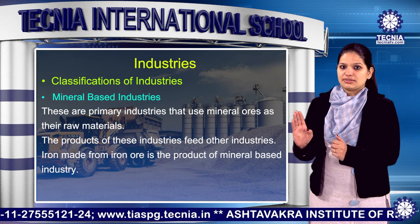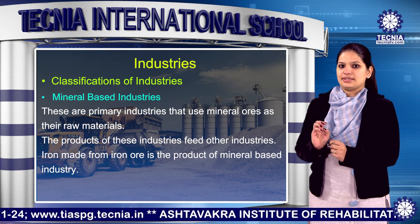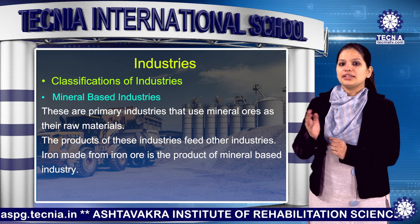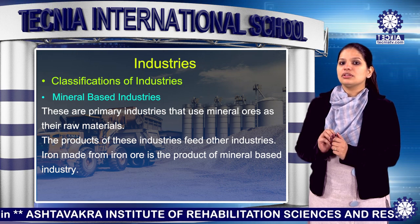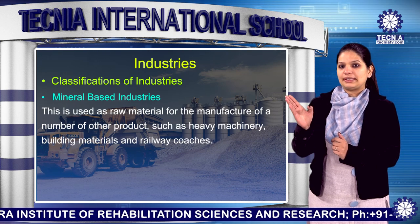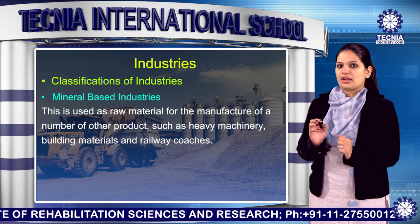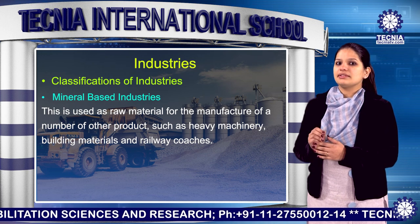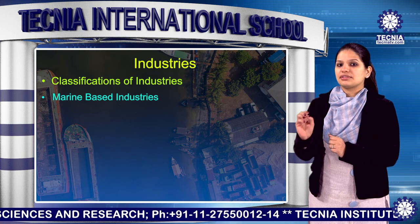Now let's come to mineral-based industries. These are primary industries that use mineral ore as their raw materials. The products of these industries feed other industries also. Iron made from iron ore is the product of a mineral-based industry. This is used as a raw material for the manufacture of a number of other products such as heavy machinery, building materials and railway coaches.